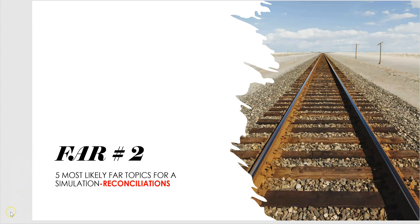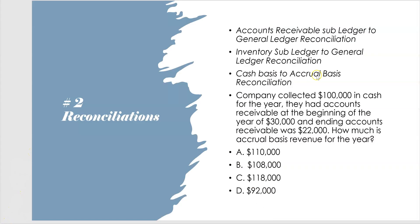The CPA FAR exam has really fallen in love with reconciliations. What kind of reconciliations? Like a bank rec? Well, maybe, but there's a lot more reconciliations they ask about. In fact, accounts receivable subledger to general ledger reconciliation — I have one of those simulations in the I-75 FAR course, and my instincts are telling me it's very likely to be tested. Same with inventory subledger to general ledger reconciliation. Cash basis to accrual basis reconciliation is another highly likely topic. I want to go over the cash basis to accrual basis reconciliation right now.